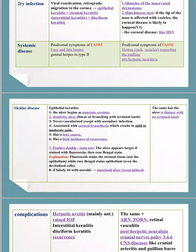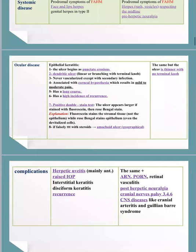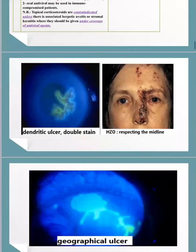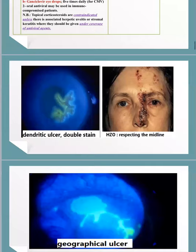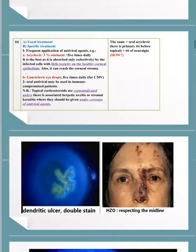There may be pre- and post-herpetic neuralgia in cases of herpes zoster ophthalmicus or shingles. For ocular disease, epithelial keratitis presents as a dendritic ulcer with terminal bulbs or dilatation. The double stain technique uses fluorescein, which stains the bed of the ulcer, and rose bengal, which stains the edges. This double stain is unique and characteristic of herpetic epithelial keratitis.